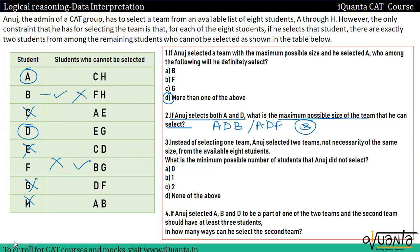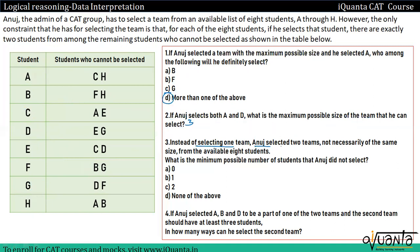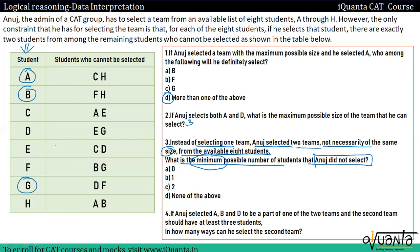Third question पर आते हैं। Instead of selecting one team, Anuj selected two teams — not necessarily of the same size — from the available eight students. Two teams, not necessarily of the same size. What is the minimum possible number of students that Anuj did not select? अगर मुझे इस value को minimize करना है तो मुझे try करना होगा कि सभी students किसी ना किसी team में रहें — तभी minimum value मिलेगी।